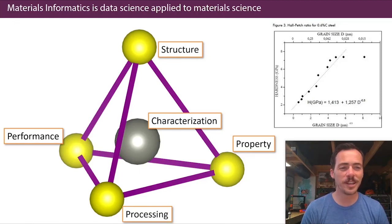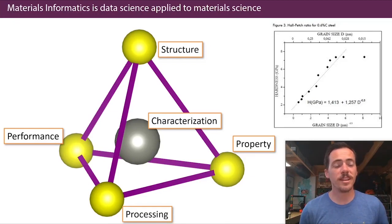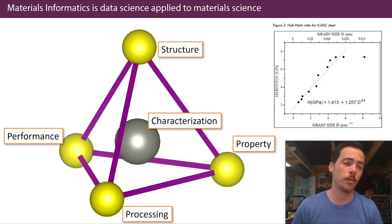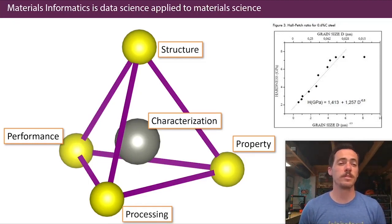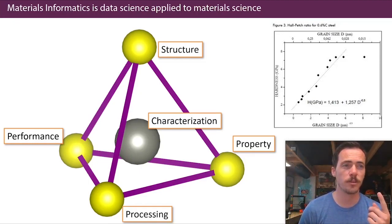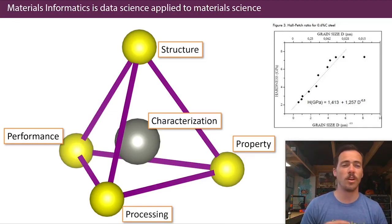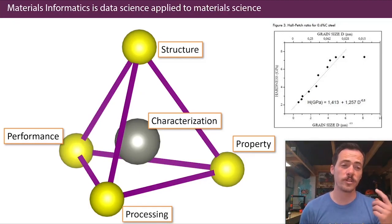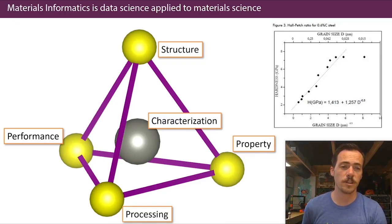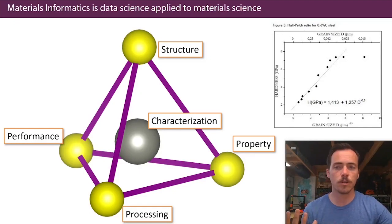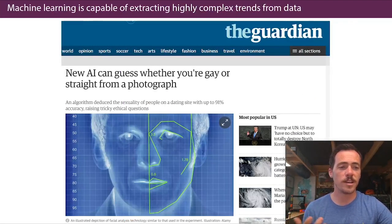Why do we need data science if we can do that on our own? Data science allows us to handle much more complicated relationships — instead of simple ones like grain size, maybe it's many different relationships, and maybe they're non-linear and complex. Those are things that are really hard for us to capture with our human intellect, but things we can capture quite easily through data science. So let's consider a few examples.